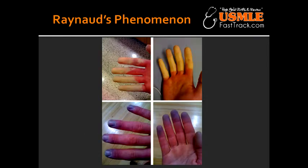Raynaud's Phenomenon. What is Raynaud's Phenomenon? Raynaud's Phenomenon is a decrease in the blood flow to the skin due to arteriolar vasospasms in response to cold temperature or emotional stress. Raynaud's Phenomenon most often occurs in the fingers and toes.